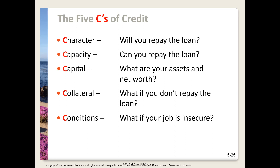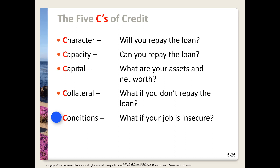When you're ready to apply for a loan or credit, these are the criteria a lender or card issuer will look at — called the five C's of credit. Character: will you repay the loan? Have you shown yourself to be a responsible user of debt? How long have you been at your current address and employer? Capacity: can you repay the loan? How much do you make and what other liabilities do you have? Capital: what are your assets and net worth? Collateral: are you offering any assets as collateral against the loan? Conditions: is your job secure? The bottom line of all this is a credit rating.